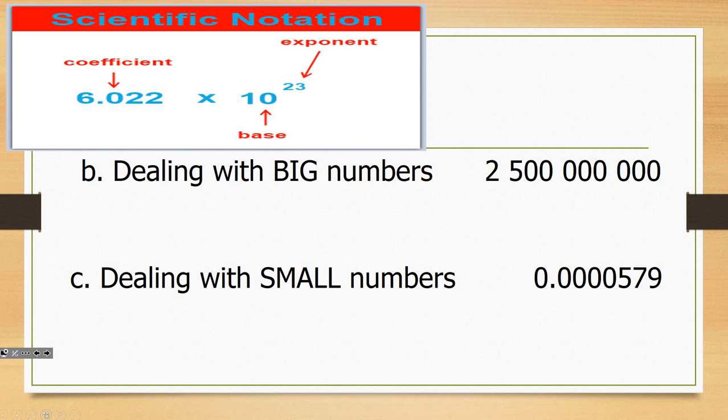If the exponent is positive, it's a really big number. If the exponent is negative, it's a really small number. When I'm dealing with big numbers, I want to make it so there's only one digit in front of the decimal. So this number right here I would want to write as 2.5, and then I count. The decimal is right here right now. I need to count 1, 2, 3, 4, 5, 6, 7, 8, 9. So there's nine places I need to move it. So I go 10 to the ninth power.